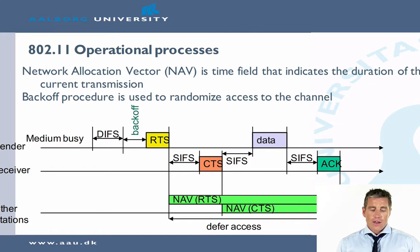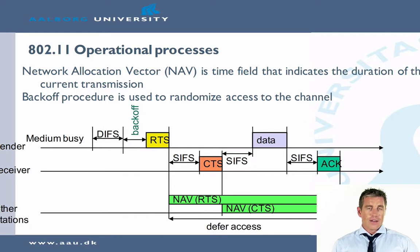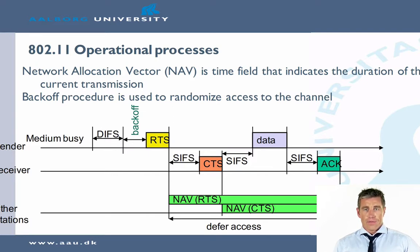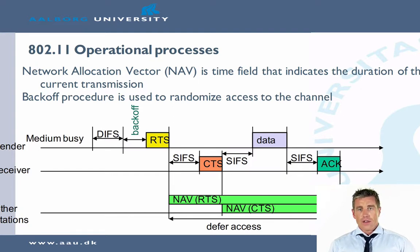When the sender sends his request to send, other stations will start to enable the network allocation vector based on either the RTS or the CTS. After the CTS has been received by the sender, he will start sending the data, and when he finishes sending the data there is a SIFS time, which can be used for triggering when to send the acknowledgement. When the acknowledgement has been sent, the medium is free again, and we have again this priority of times, so we can start sending DIFS frames and continue with the different procedures.